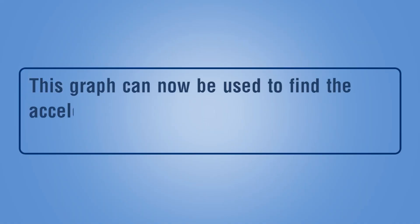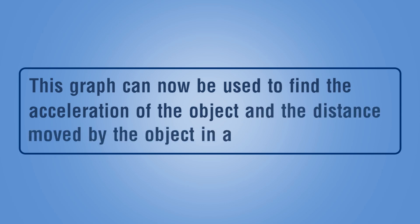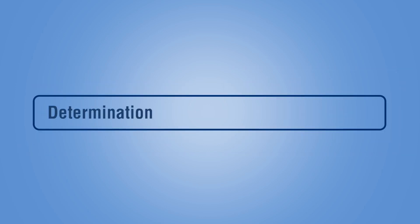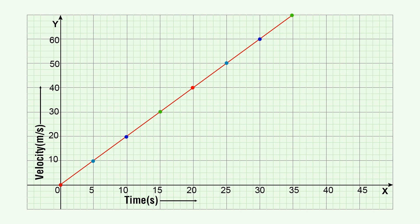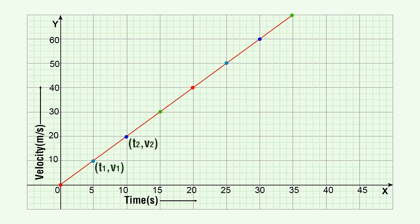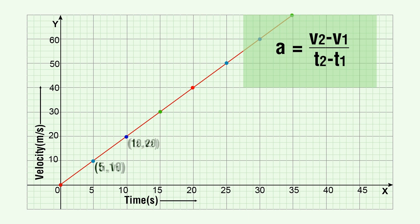This graph can now be used to find the acceleration of the object and the distance moved by the object in a given time interval. Determination of acceleration: to determine the acceleration of the car, consider any two points on the straight line graph and find their corresponding velocity v and time t values. It is better to choose points that correspond to integral values of time and velocity to simplify calculations. Let the selected coordinates be (t1, v1) and (t2, v2). Calculate the acceleration as a equal to (v2 minus v1) divided by (t2 minus t1).